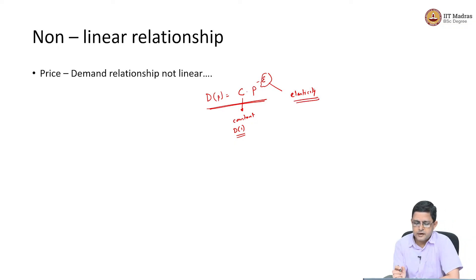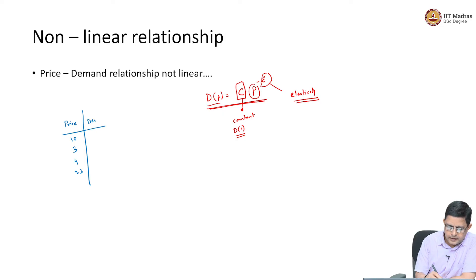Here the relationship is clearly not linear between the demand and the price, and we want to understand how do we estimate the value of C and the value of epsilon if we have data for this experiment. The experiment is still going to be the same. We are still going to say that we are going to offer various prices in the market - we will offer 10 rupees and 3 rupees and 4 rupees and 23 rupees and so on. And we will collect the corresponding demand that is realized in the market whatever those values are.